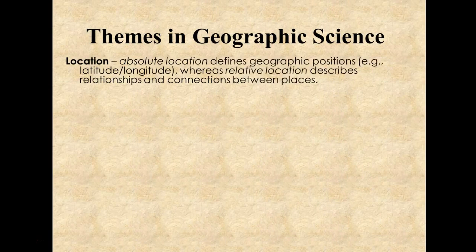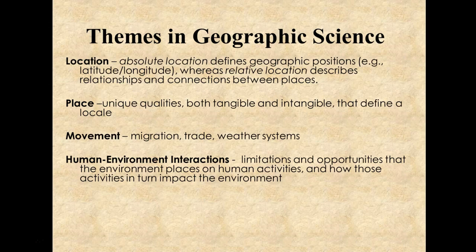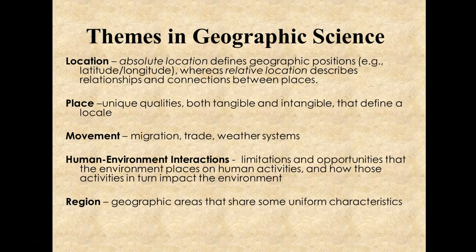Here we see descriptions of the themes in geographic science: location, both absolute and relative; place; movement; human-environment interactions; and region. We'll be talking a little bit more about region here in a few moments.